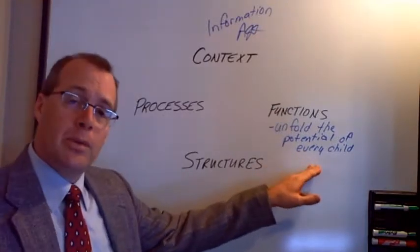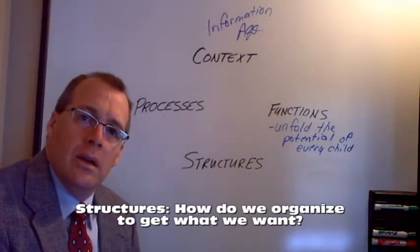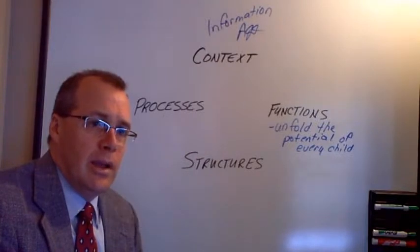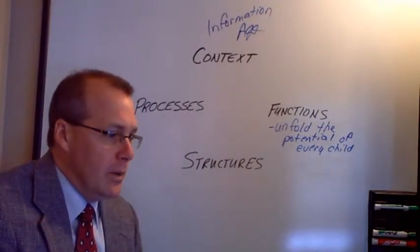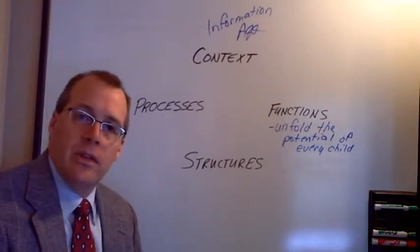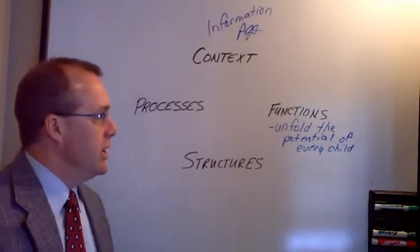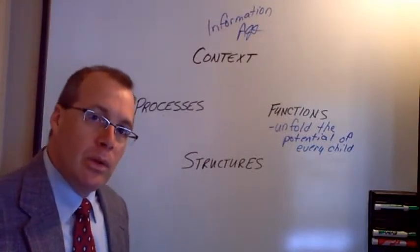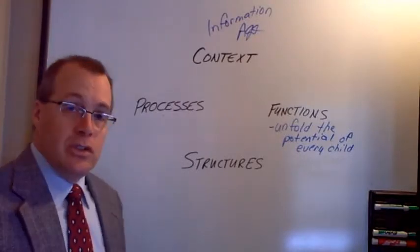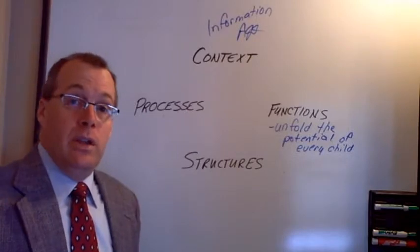It's no longer good enough to just sort out the ones who get it on a certain timeline that's prescribed much like a factory model. We must unfold the potential. Well, if we're going to unfold the potential of every child, what do our structures need to look like? Well, the factory model doesn't seem to be the correct model. Strict compliance to rules, time-bound, batching kids, organizing them by age, simplifying the work down, separating the subjects out, those seem relatively incompatible to unfolding the potential of every child. So structures may very well need to change. I would argue they do need to change.